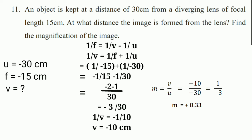Substituting the values: 1/v = −1/15 − 1/30. Taking LCM of 30: 1/v = (−2 − 1)/30 = −3/30 = −1/10. By cross-multiplying, v = −10 cm. Now for magnification, m = v/u = −10 / −30 = 1/3, therefore m = +0.33.